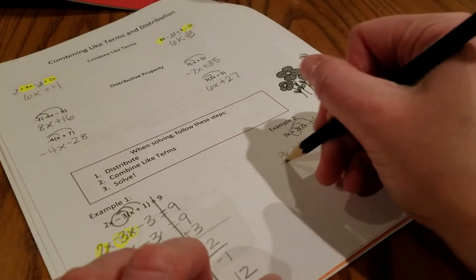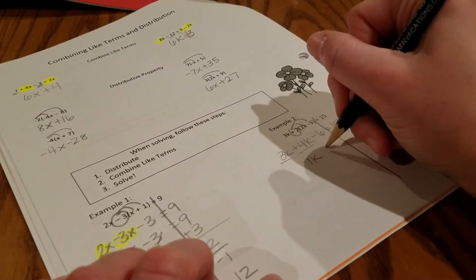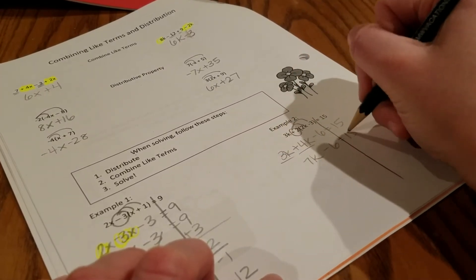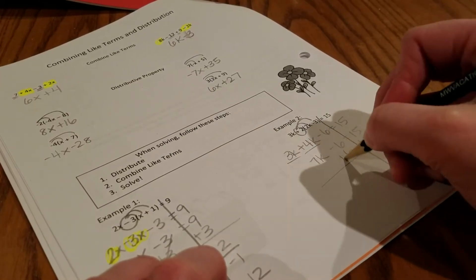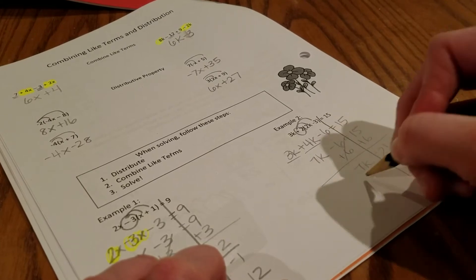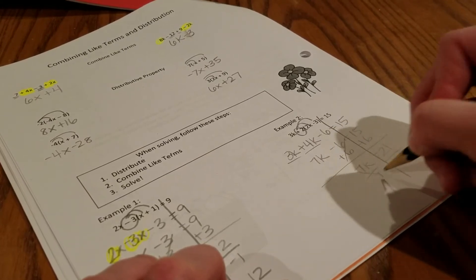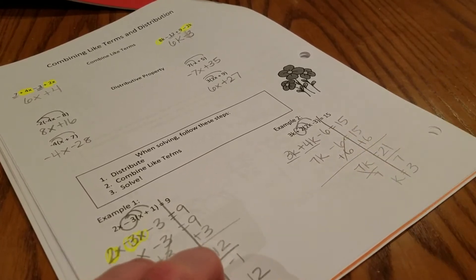So like terms, 3k and 4k. 7k minus 6 equals 15. Add 6. So 7k equals 21. Divide by 7. K equals 3.